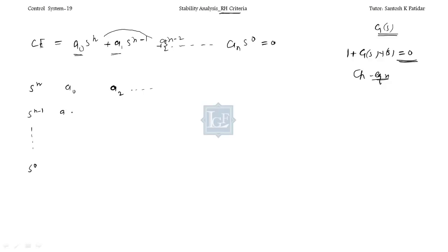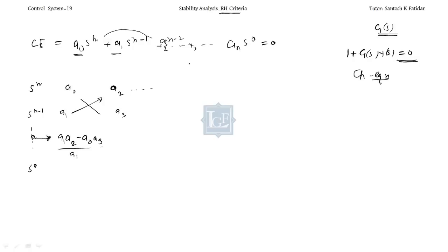In the second row you write a₁, then a₃. To find the next row element, you multiply a₁ × a₂ minus a₀ × a₃, all divided by a₁. You continue this same procedure downward. At the end you get the full first column of the RH table in terms of the coefficients of the characteristic equation. Don't worry — we will take an example and it will be crystal clear.